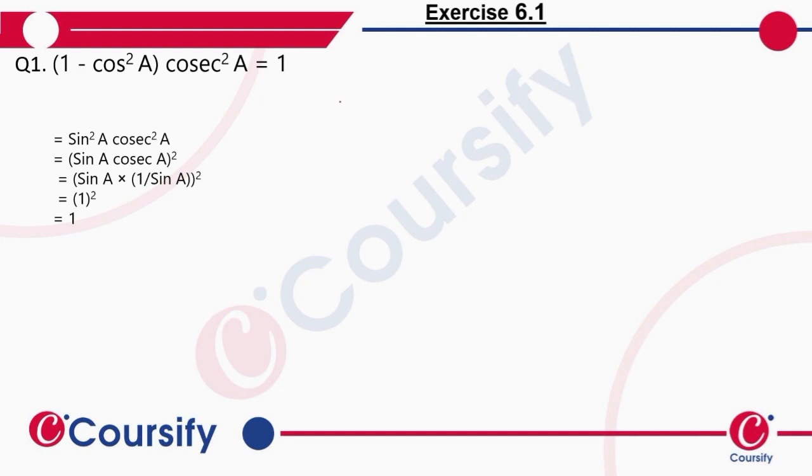So here, first in the first step we will use the formula that sine square A plus cos square A is equal to 1.